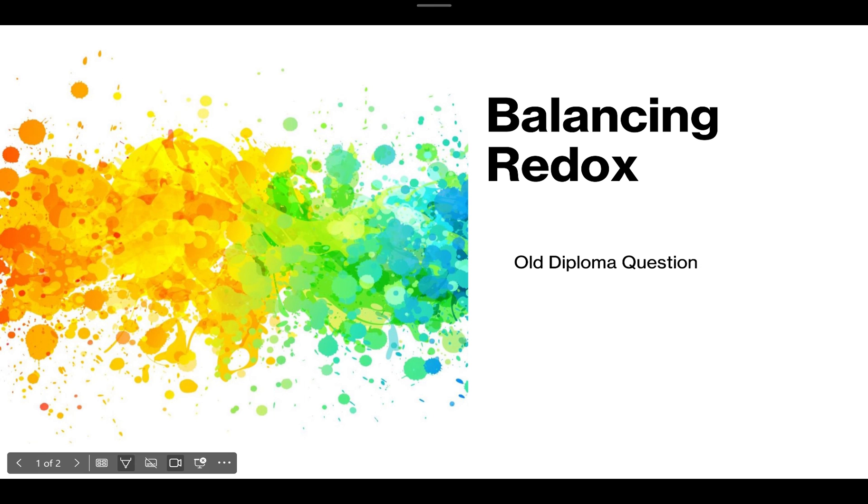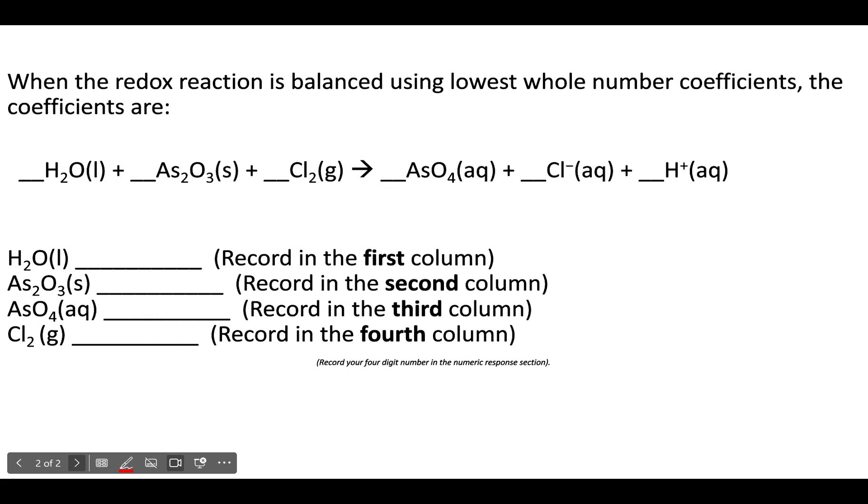Okay, so here we're taking a look at balancing a redox reaction. If you're balancing a redox reaction, you can't balance by inspection. You have to assign oxidation numbers because redox reactions all depend on an exchange of electrons. So we have to make sure those electron exchanges are the same and then balance accordingly.